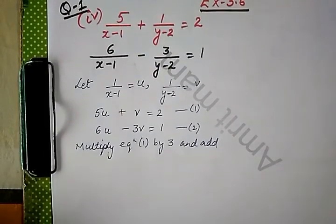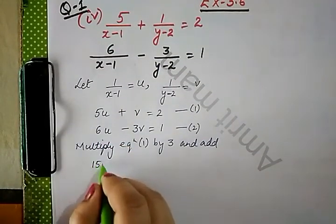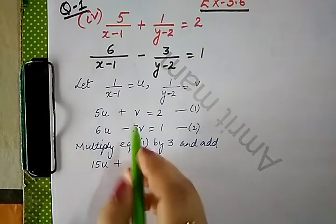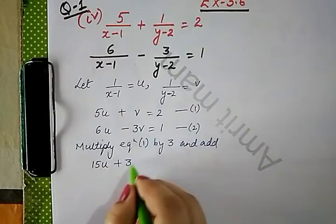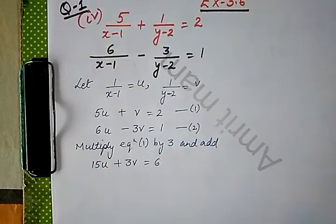On multiplying first by 3 what we get? 3 into 5 that is 15u plus 3 into v, 3v is equal to 3 into 2 that is 6.